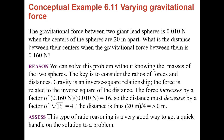Example: The gravitational force between two giant lead spheres is 0.01 newtons when their centers are 20 centimeters apart. What is the distance when the force is 0.16 newtons? First, find how many times greater 0.16 is than 0.01 — dividing gives 16 times greater. By the inverse square law, if force increases 16 times, distance decreases by the square root of 16, which is 4. So 20 centimeters divided by 4 gives a distance of 5 centimeters.